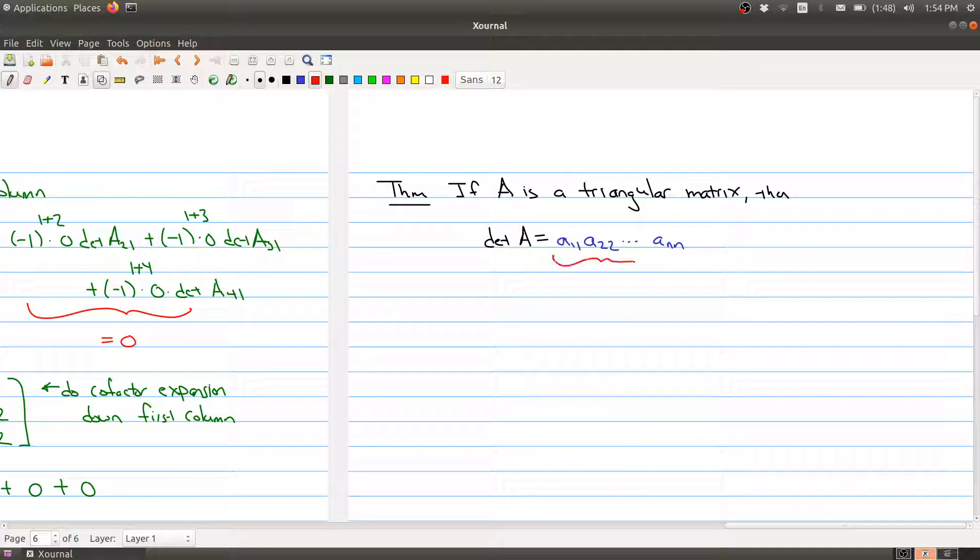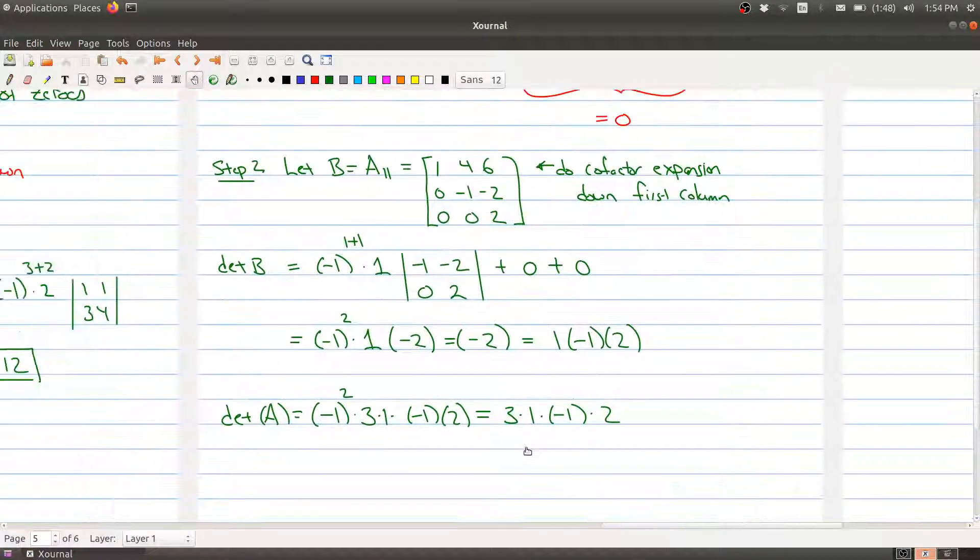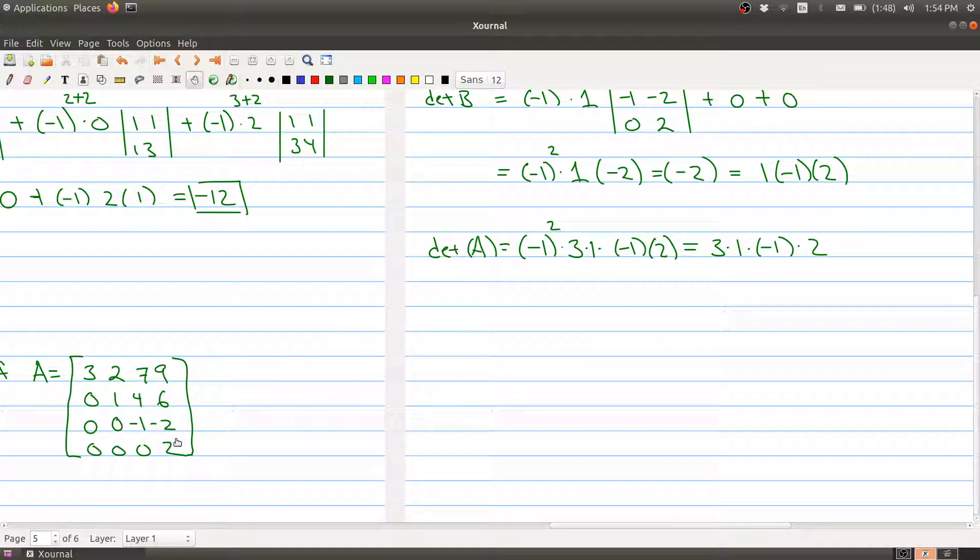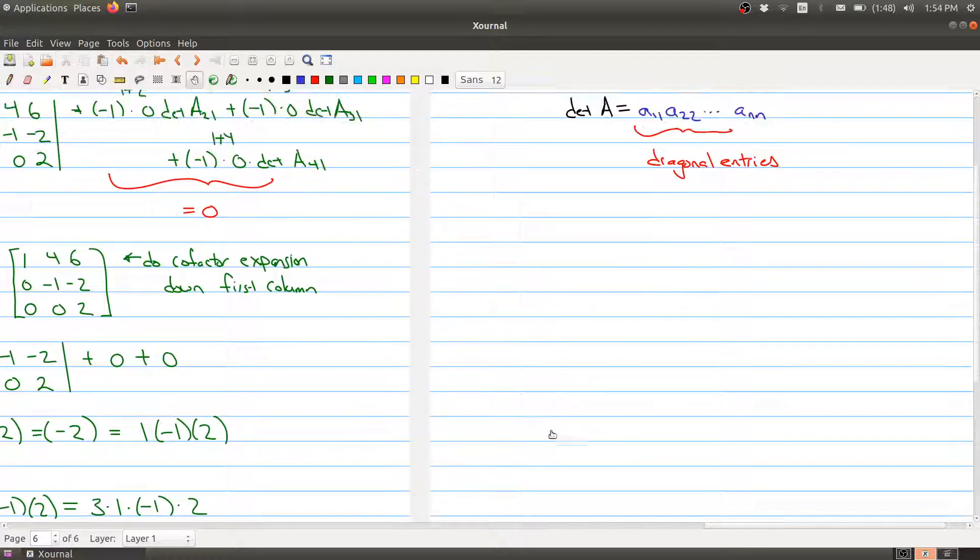So these are the diagonal entries. Now pay attention, this only holds for triangular matrices, and we see that this is indeed the case in our example because these are the diagonal entries of my matrix A.